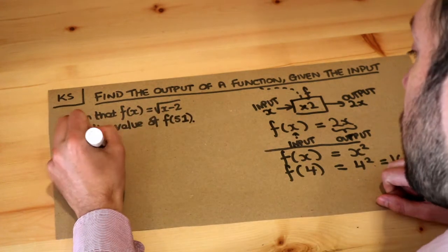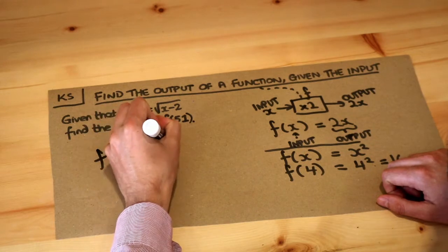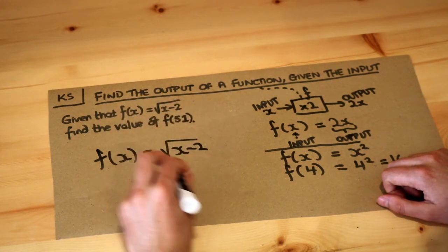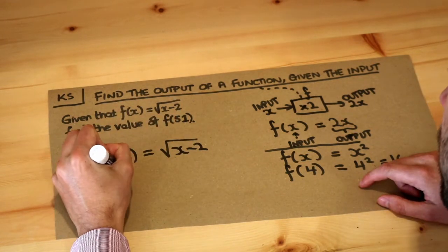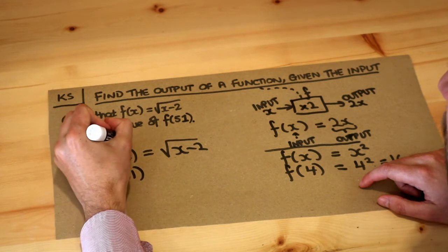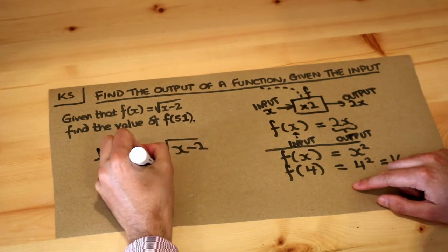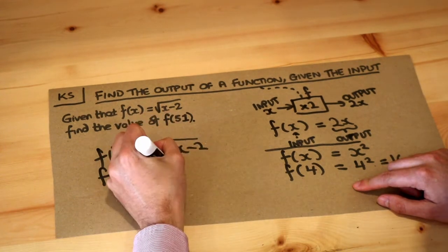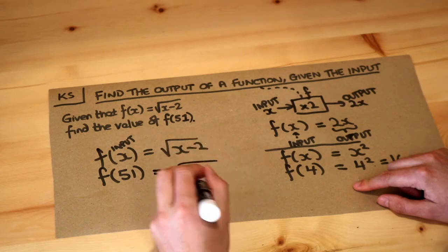So let's look at this. We've got f(x) = √(x - 2). We want to find f(51). So the input x has been substituted with 51. We've made the input 51. And that means on the right-hand side, we also make that x 51.